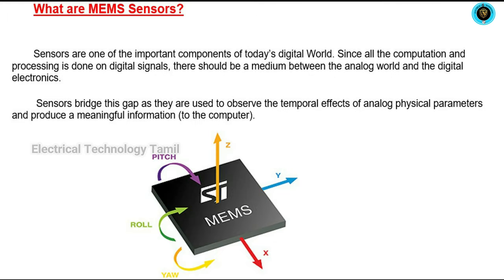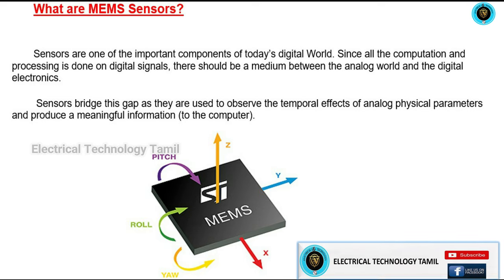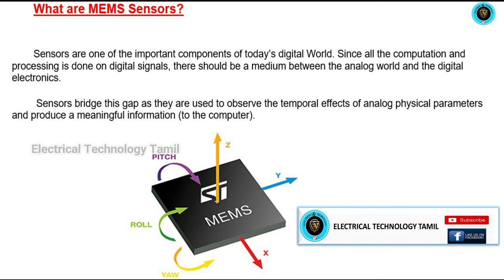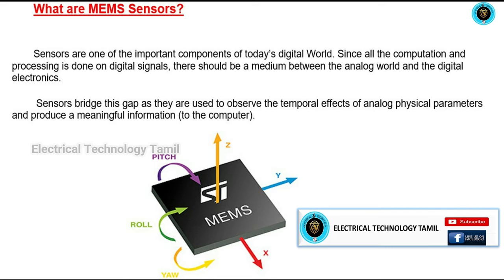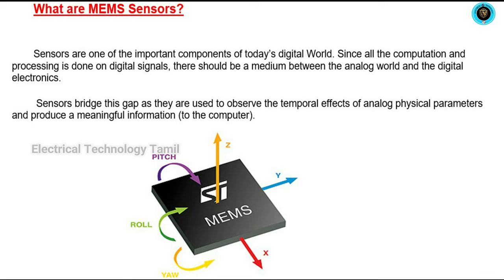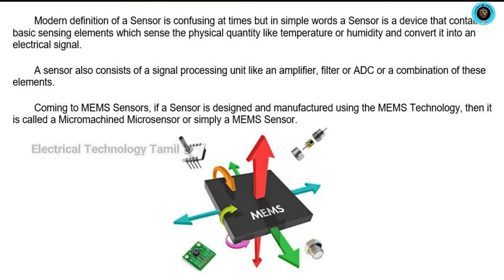MEMS is used as a digital organization in the world. We can use the MEMS sensors to make a digital computer. In the MEMS sensor, there are physical quantities like temperature, humidity, and inbuilt elements. It can convert them into an electrical signal.